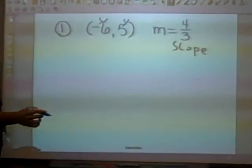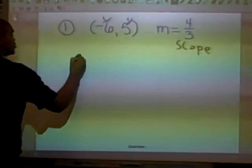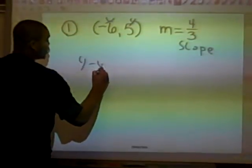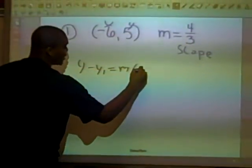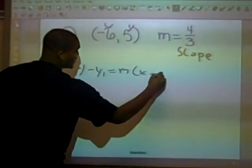The play, or in this case the formula, is Y minus Y1 equals M times X minus X1.